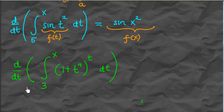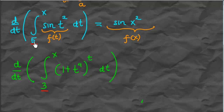Before doing the next example, notice that the number on the lower limit of the integral doesn't matter. As long as our function is continuous on that interval, that number doesn't matter — you can start from 1000, 1 million, negative 5, negative 100. It doesn't matter. So let's go back to the second example.